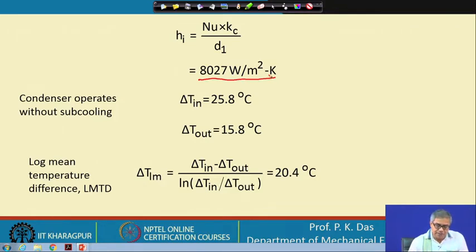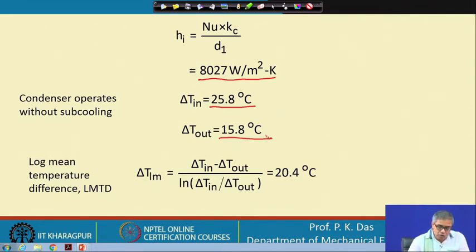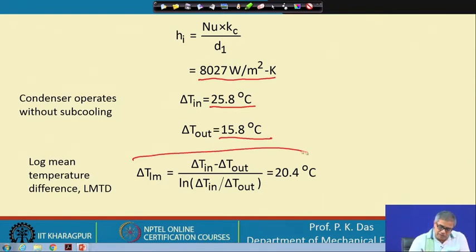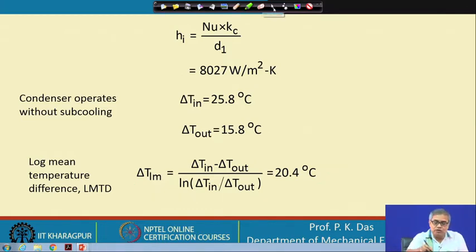Now we know the condensing steam temperature. In the heat exchanger, at the inlet side for the coolant we know the temperature difference, and at the outlet side we also know the temperature difference. From these we can calculate the log mean temperature difference (LMTD), which we obtain and can move to the next slide.